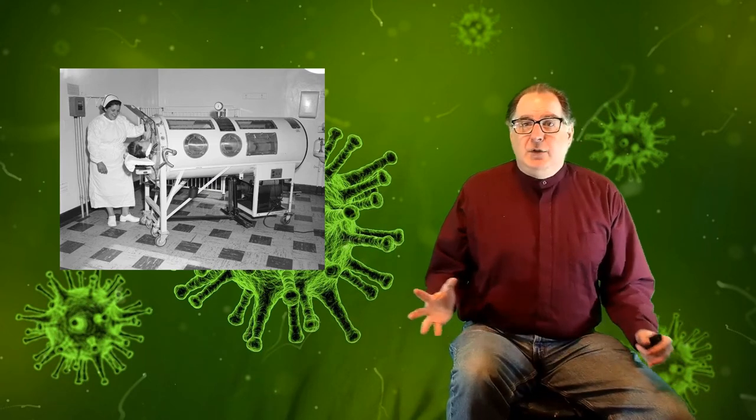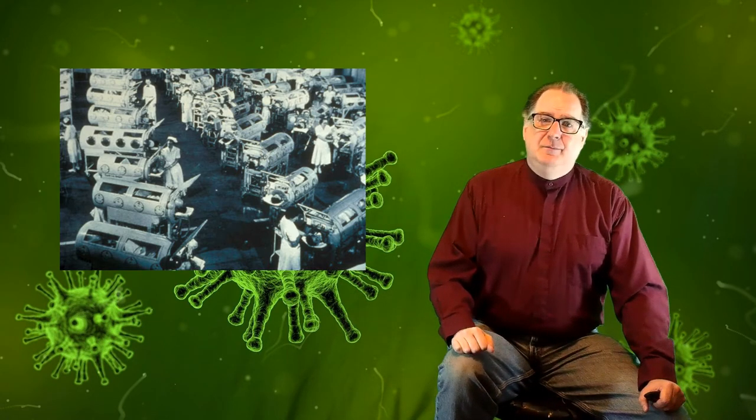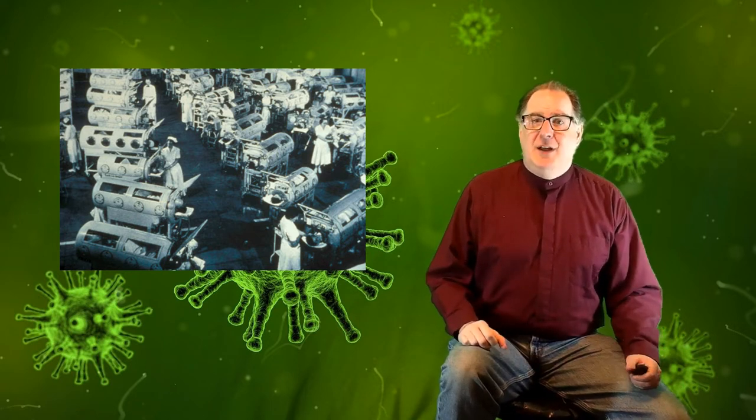They need artificial help to breathe. The solution was the iron lung, a large cylinder that the person lays down in with their head sticking out. It's sealed around the neck, and a motor increases and decreases the air pressure in the cylinder. When the air pressure is decreased, it causes the chest to rise, and the person inhales. When the air pressure is increased, it pushes the chest down, and the person exhales. This is what an iron lung looks like. There's a mirror above the head so the patient can see to the side. Here's a hospital ward full of patients in iron lungs. These patients pretty much had to spend the rest of their lives in these things.